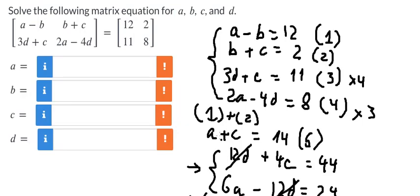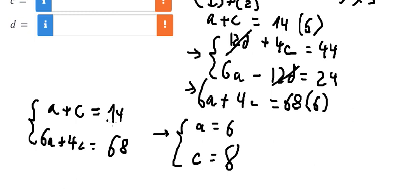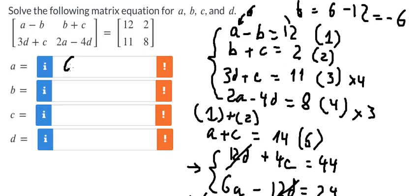After we get a equals six, we can find b. Using the first equation, we have six minus twelve. We rearrange to get b equals 6 minus 12, which gives us b equals negative six. So we have a equals six, b equals negative six, and c equals eight.